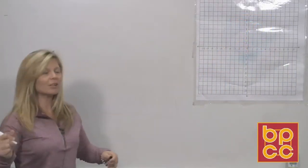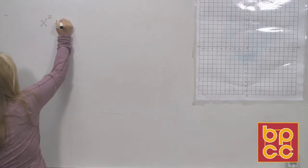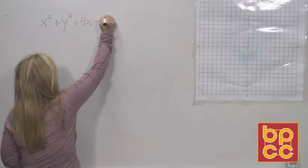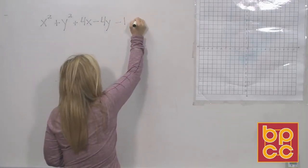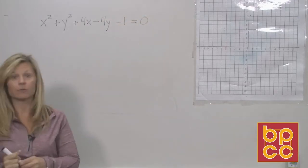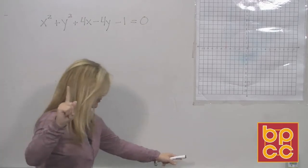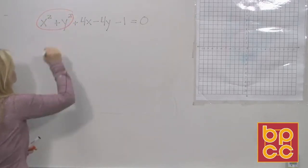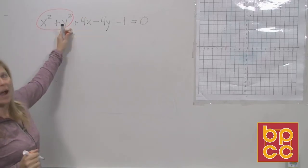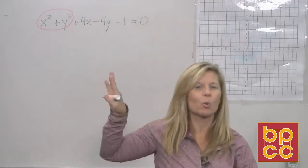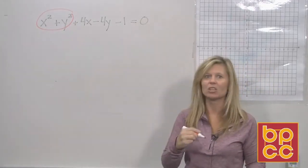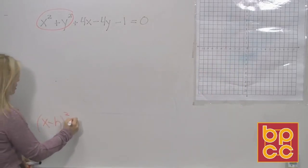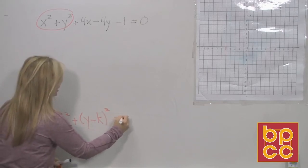The first equation is x² + y² + 4x − 4y − 1 = 0. I know it's a circle — that's the first thing. The x squared gives a curve, y squared gives a curve, and the plus brings them together. So I know this is an equation of a circle. The problem is it doesn't look like what we want. Our goal is to get it to look like (x − h)² + (y − k)² = r².